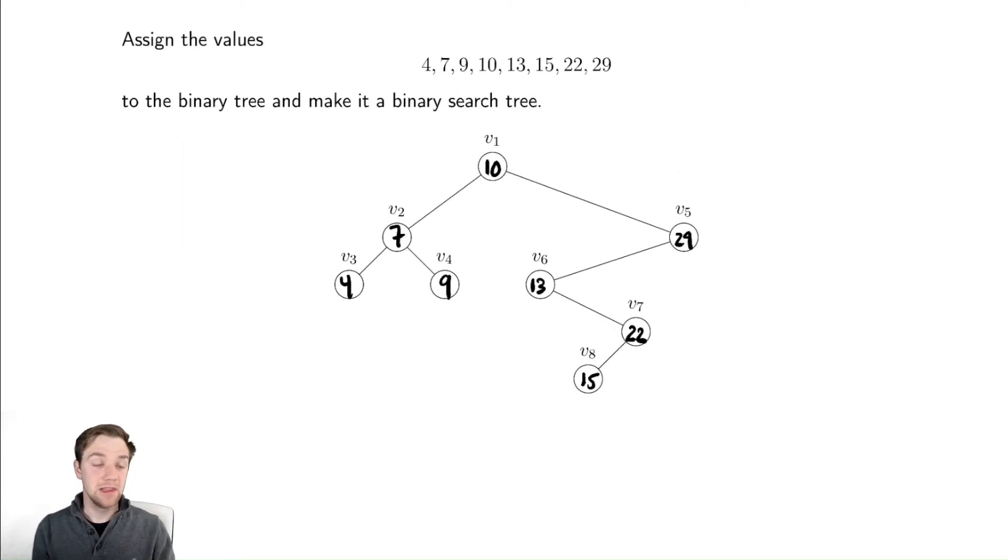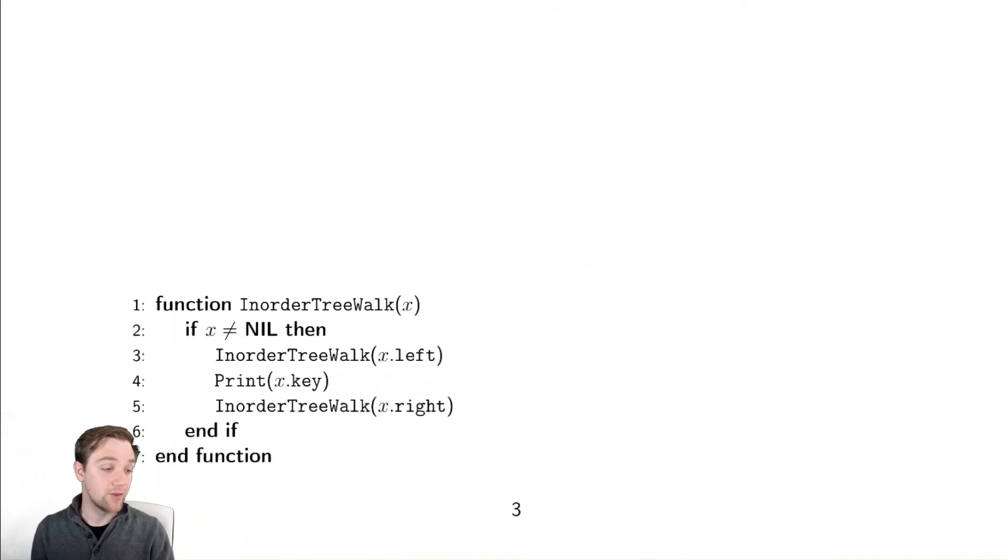Now something related to binary search trees that is a very reasonable place to start with methods is talking about how do you traverse the tree. This will be very reminiscent of your foundations class when you talked about graph traversal algorithms, things like depth first search and breadth first search. These are similar to what we're going to talk about.